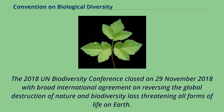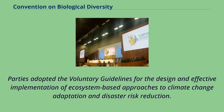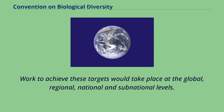Parties adopted the voluntary guidelines for the design and effective implementation of ecosystem-based approaches to climate change adaptation and disaster risk reduction. Governments also agreed to accelerate action to achieve the Aichi Biodiversity Targets, agreed in 2010, until 2020. Work to achieve these targets would take place at the global, regional, national, and subnational levels.